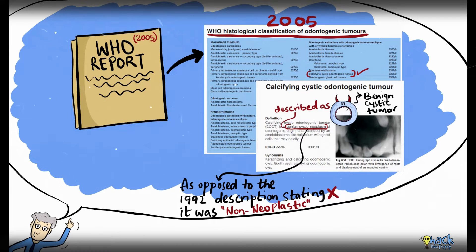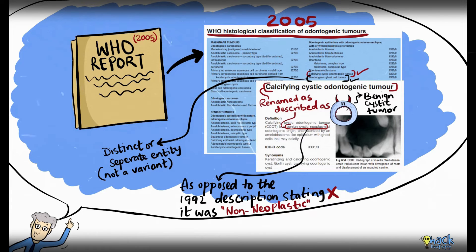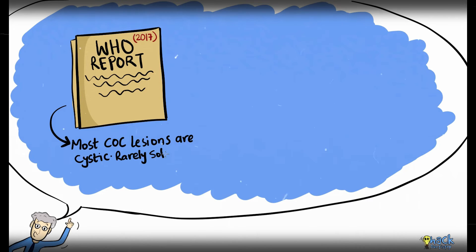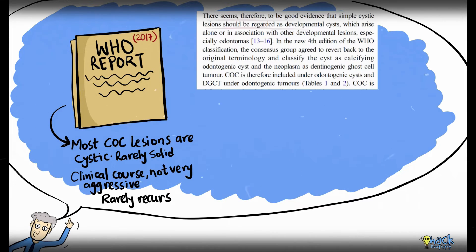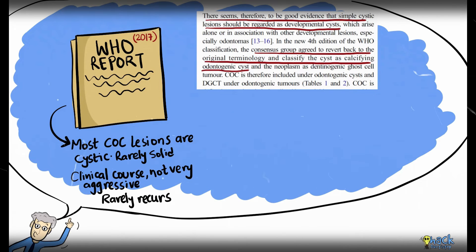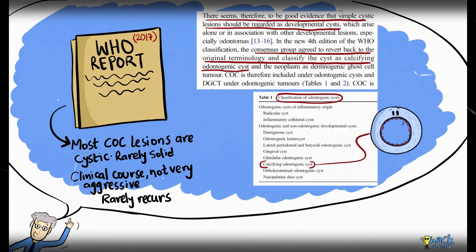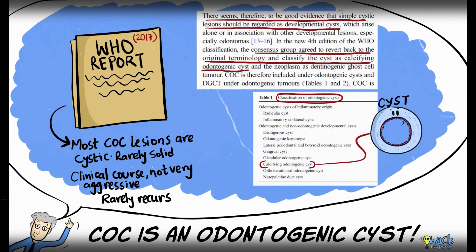Hence the lesion was retained under the odontogenic tumor category but renamed as Calcifying Cystic Odontogenic Tumor, while its solid variant, dentinogenic ghost cell tumor, was considered a distinct entity. However, the most recent WHO report in 2017 states that most Calcifying Odontogenic Cyst lesions are cystic in nature, rarely solid tumors, with a non-aggressive clinical course and rare recurrence. There is now sufficient evidence to deem these lesions as simple developmental cysts, and pathologists have agreed to revert to the original terminology — Calcifying Odontogenic Cyst — classified under odontogenic cysts.